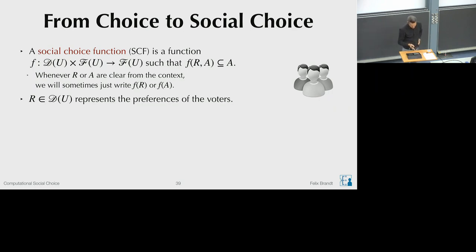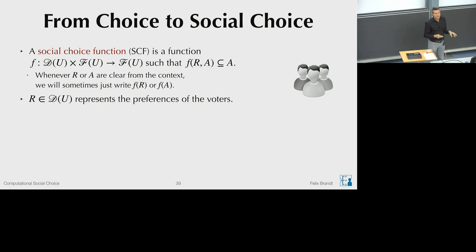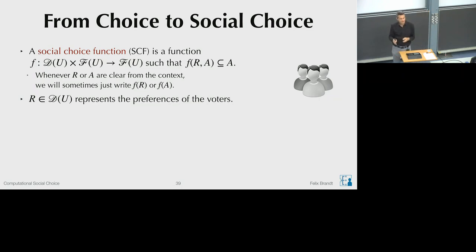This function has two parameters: R and the feasible set A. Sometimes one of these parameters will be fixed—either the preferences of the voters remain constant, or we always work with the same feasible set. When one parameter is fixed, we omit it from the function notation for simplicity.